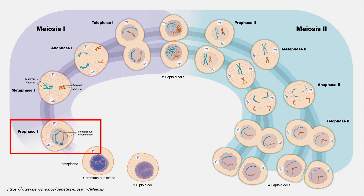In prophase I, the chromatin condenses to form chromosomes, just like in mitosis. However, homologous chromosomes — chromosomes from each parent that are of the same size and shape and carry the same genetic material — pair up with each other and exchange genetic material in a process called crossing over. This creates new allele combinations and leads to genetic variation in a species.